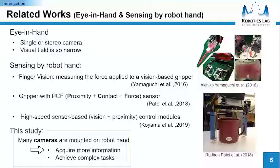Our research is related to eye-in-hand systems, sensing by robot hand, and ball-catching by robot. There are many researches about the eye-in-hand system. In many cases, an in-hand system is configured with a single camera or stereo camera. Due to this, the visual field is so narrow.